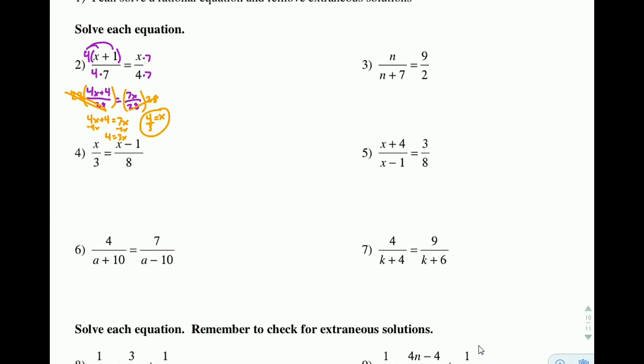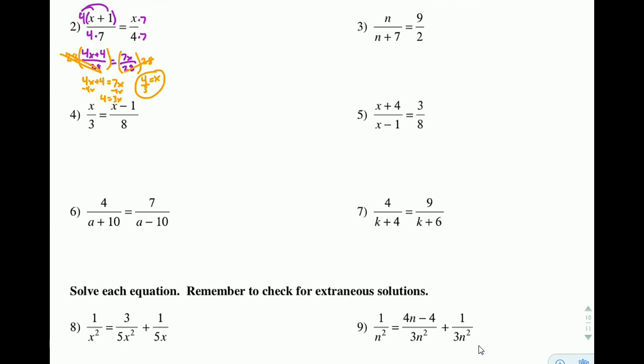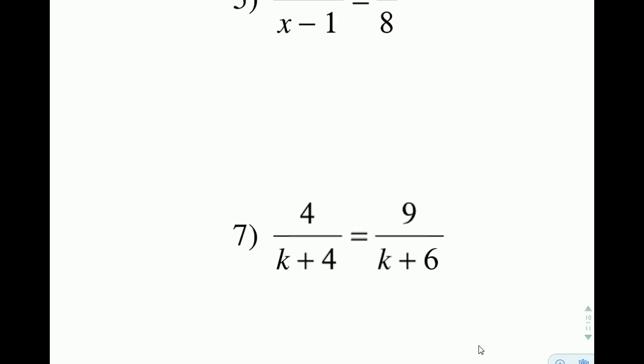Scroll down and try something a little bit trickier here. We have number 7, 4 over k plus 4 equals 9 over k plus 6.